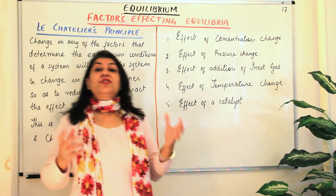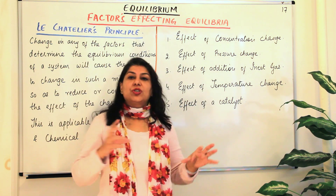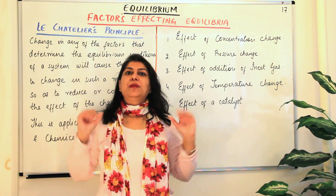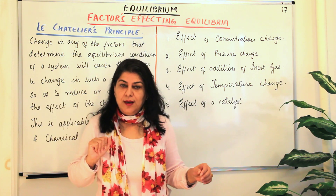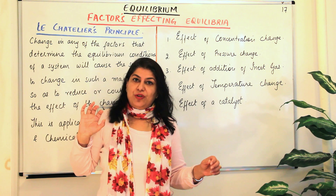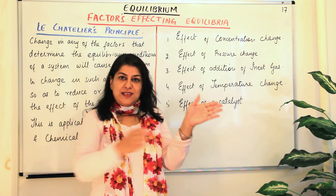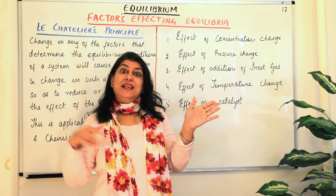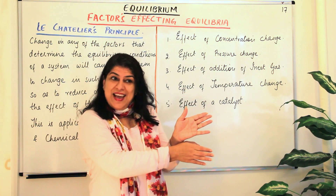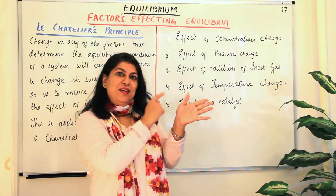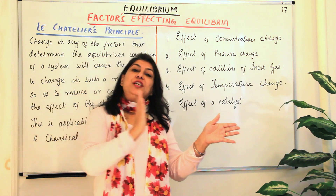The first is the effect of concentration change. You can increase or decrease the concentration of a reactant or a product when equilibrium has been established. The moment you increase the concentration of a reactant — now, what happens to the equilibrium constant? The equilibrium constant has the concentration of products divided by concentration of reactants. You have increased the concentration of reactants, so the value of QC decreases, and when QC decreases, the reaction will proceed in the forward direction to acquire the value of KC.